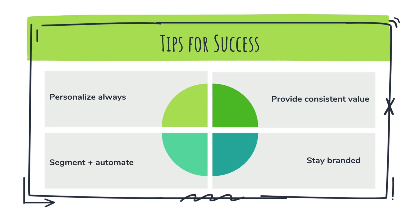Here are a few key tips to make your Klaviyo strategy truly shine. Always personalize — use first names, behavior triggers, and product recommendations. Avoid oversending, as too many emails or texts will drive unsubscribes. Segment and automate — let Klaviyo work for you, not the other way around. Stay on brand, since consistency in design and tone builds trust. And finally, always deliver value — whether it's an offer, tip, or update, make it worth their time.